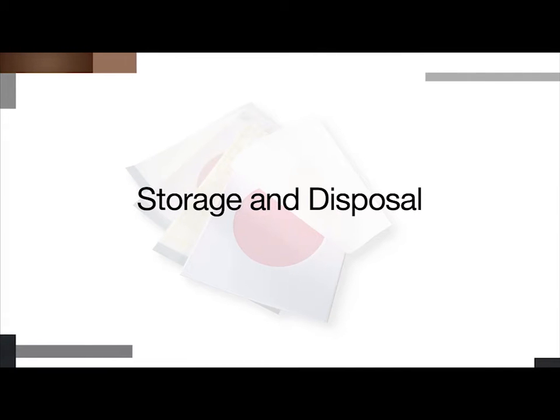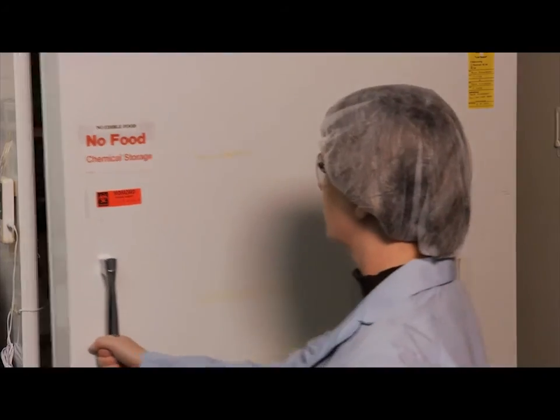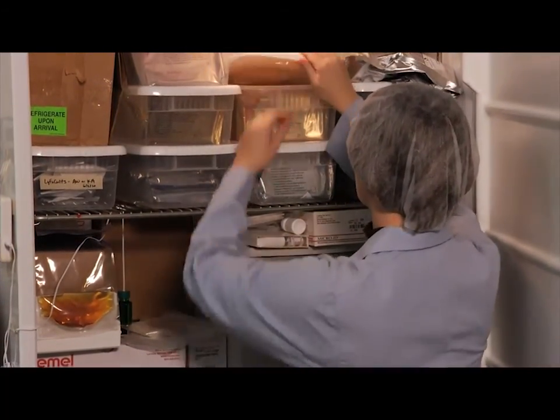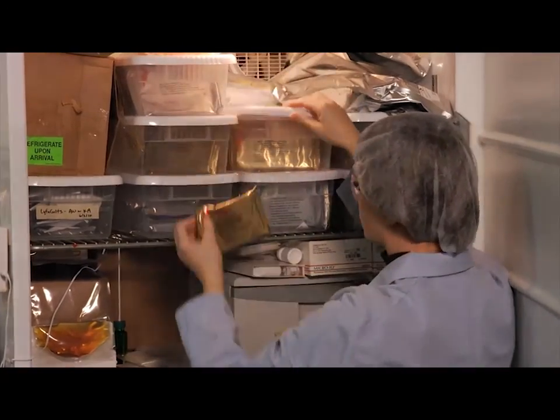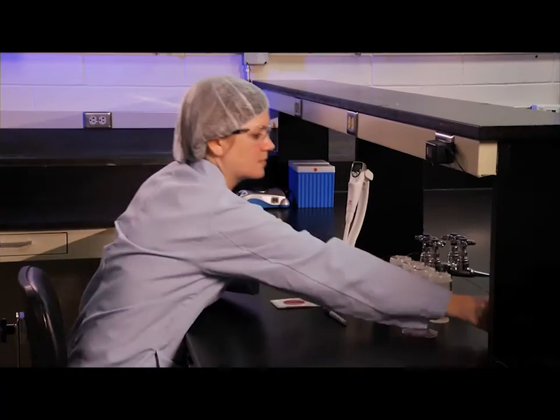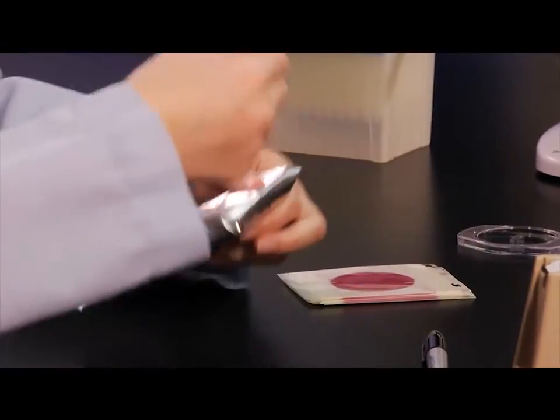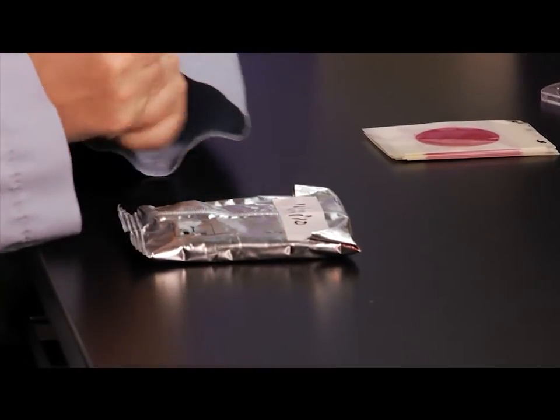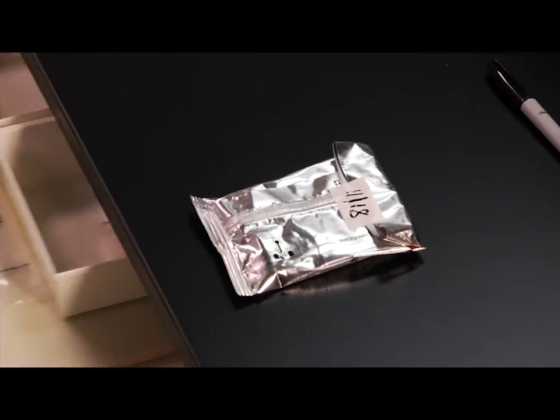3M Petrifilm plates are easy to use and require limited space and disposal. Refrigerate or freeze unopened packages upon receipt and use them before the expiration date on the package. Seal open packages by folding the end over and taping it shut. Do not refrigerate the package once it's open. Simply keep in a cool dry place and use it within one month after it's been opened.